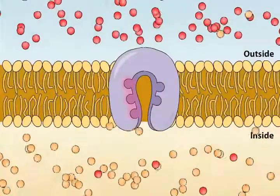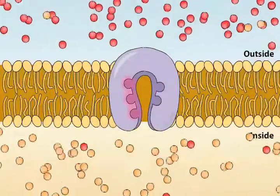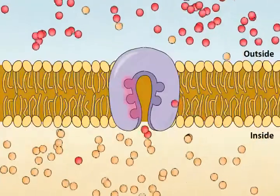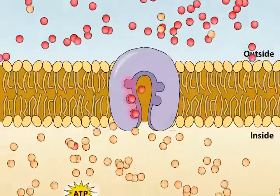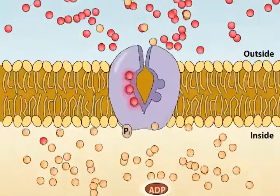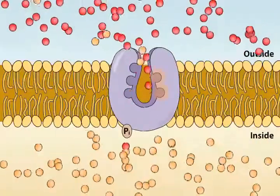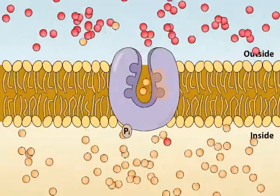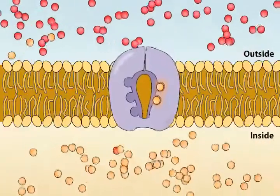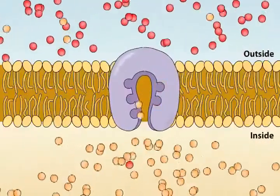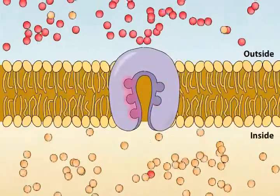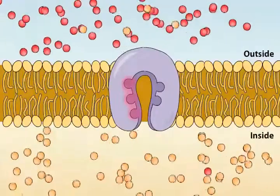For every three sodium ions that are taken out of the cell, the pump transports two potassium ions into the cell. This net loss of one positively charged ion for each round of pumping results in a very small electrical current. For this reason, the sodium-potassium pump is said to be electrogenic.